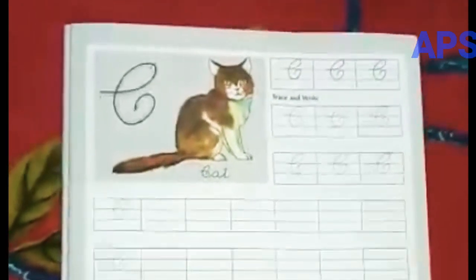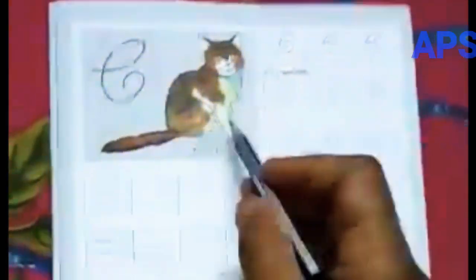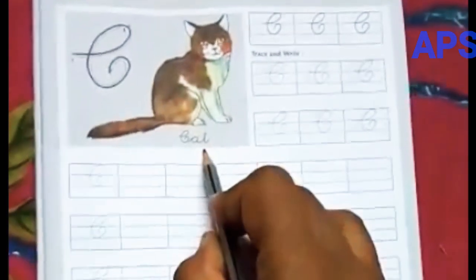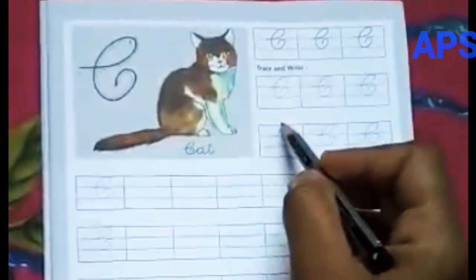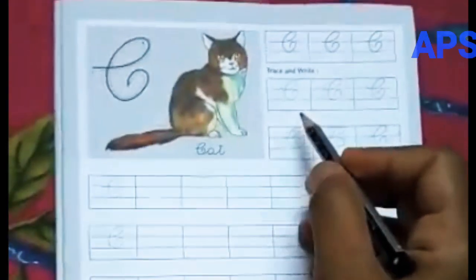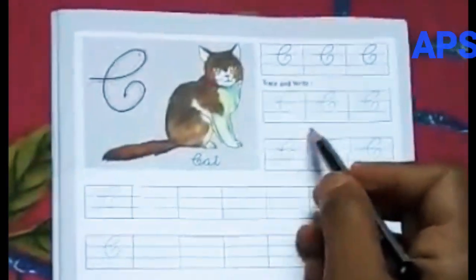Today let's start with capital letter C. C for CAT. First, trace and write. So take a pencil in your hand, look at your book, see the video and follow me.